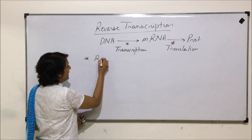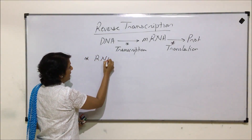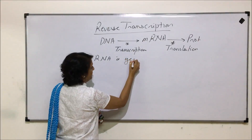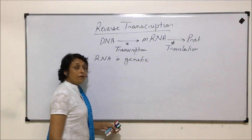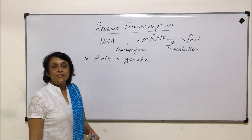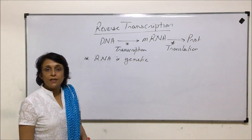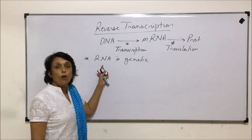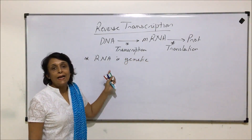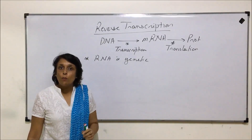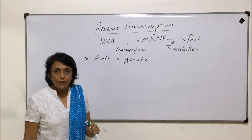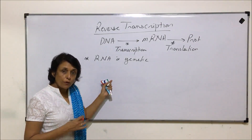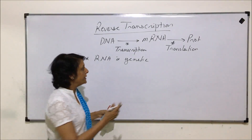Now there are certain organisms in which RNA is the genetic material. If RNA is the genetic material, then the information stored on RNA has to be translated in the form of proteins.